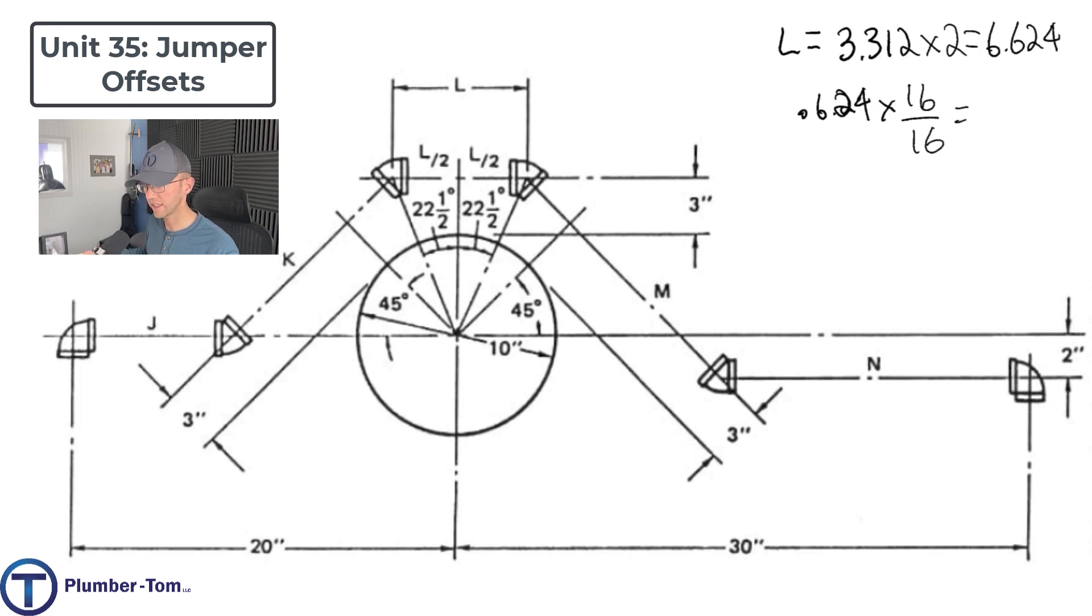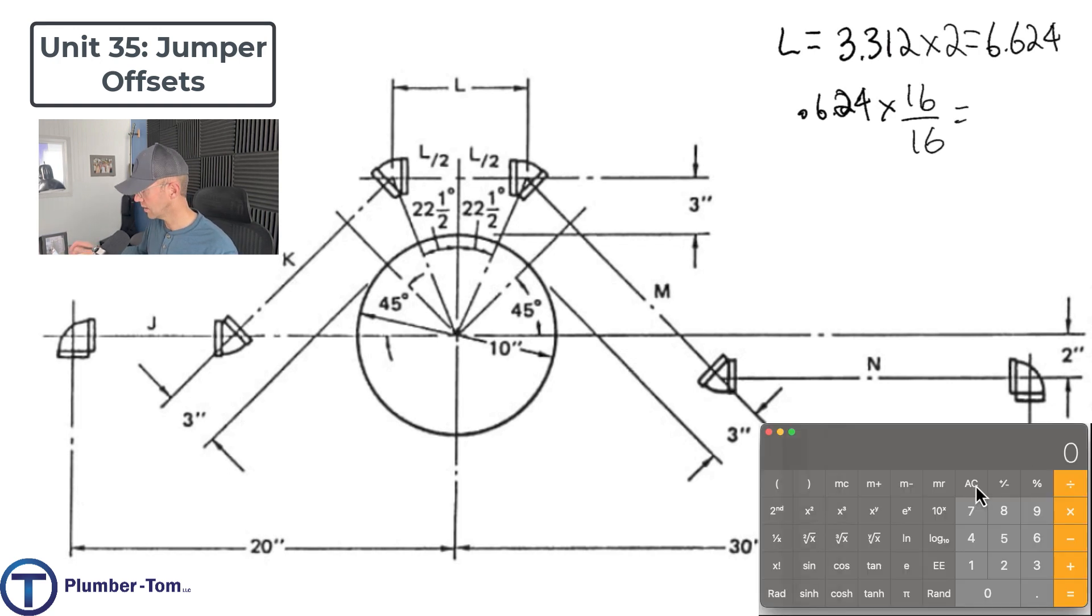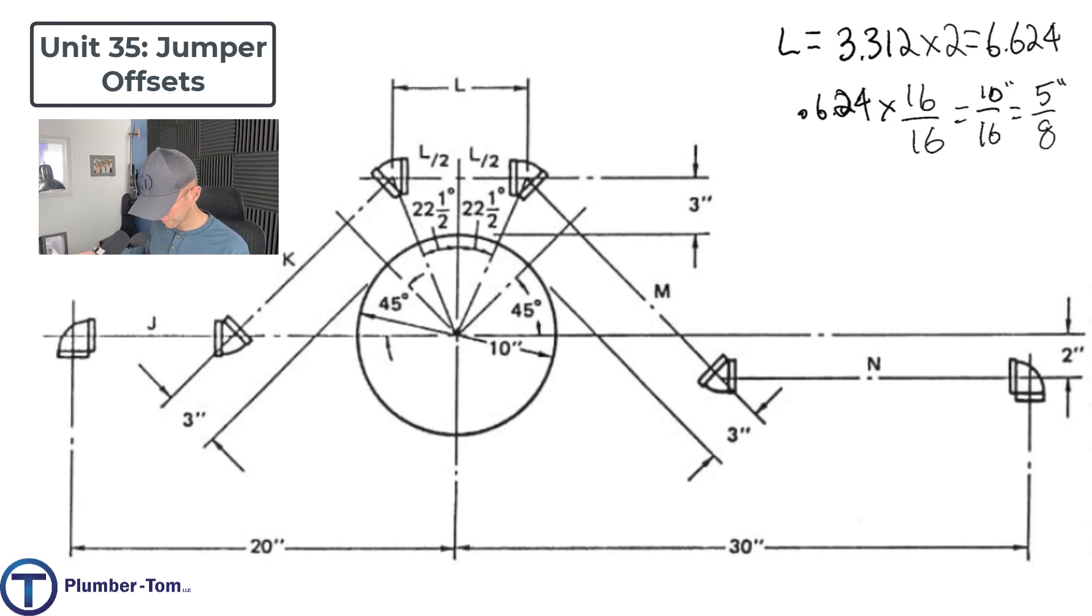And we take that .624 times it by 16 over 16. Let's get that over into 16th of an inch. .624 times 16. It's going to give us 9.9, basically 10. 10 sixteenths of an inch or we can reduce that to 5 eighths. So ultimately there we get 6 and 5 eighths of an inch. That is going to be L.